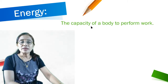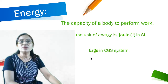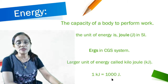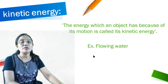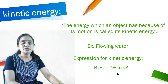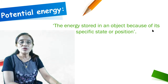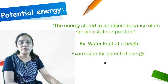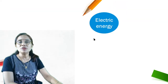What is energy? The capacity of a body to perform work is called energy. The unit of energy is Joule; the CGS unit is erg; and the larger unit is Kilojoule. 1 Kilojoule = 1000 Joule. Kinetic energy is the energy which an object has because of its motion — for example, flowing water. Kinetic energy: KE = ½mv². Potential energy is the energy stored in an object because of its specific state or position — for example, water kept at height. Potential energy: PE = mgh.